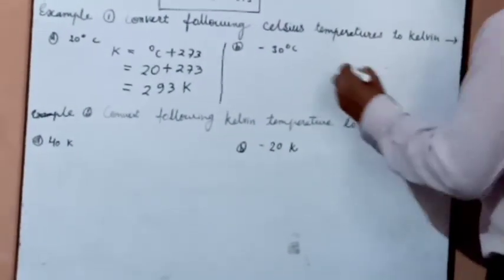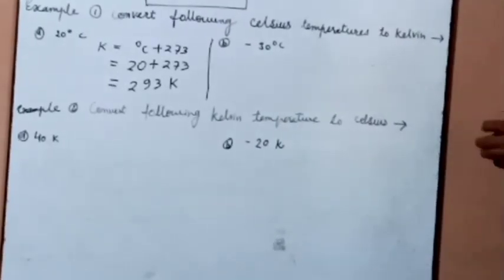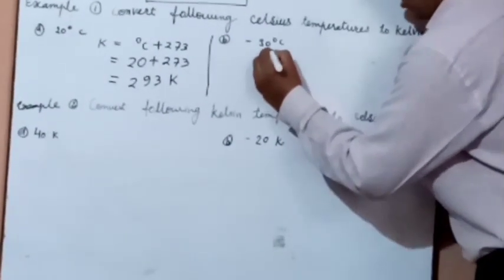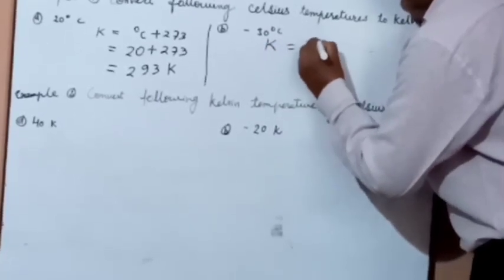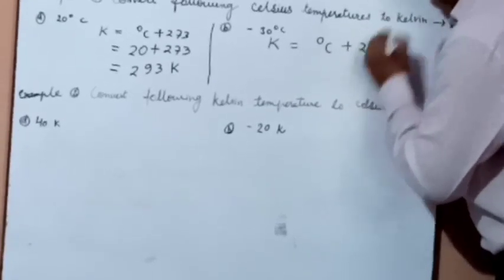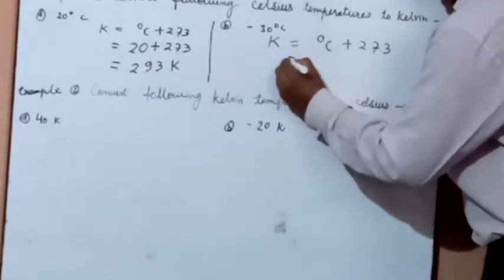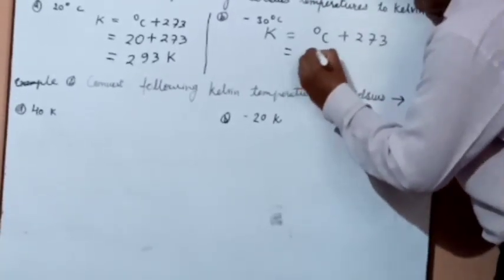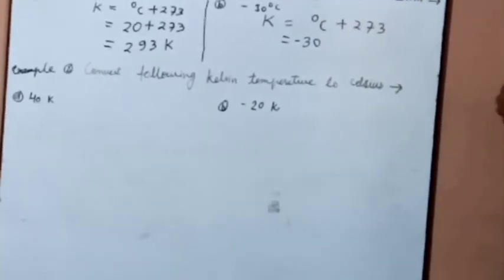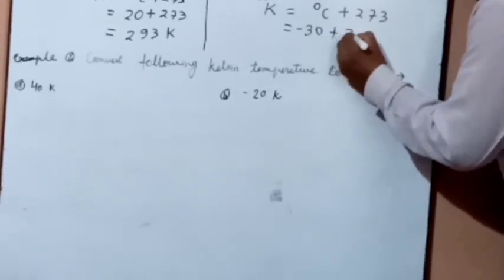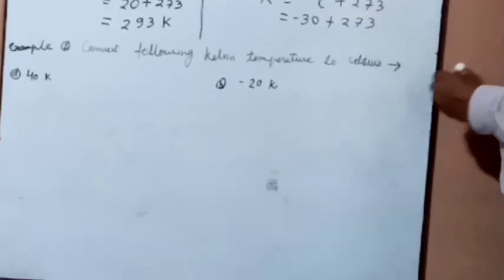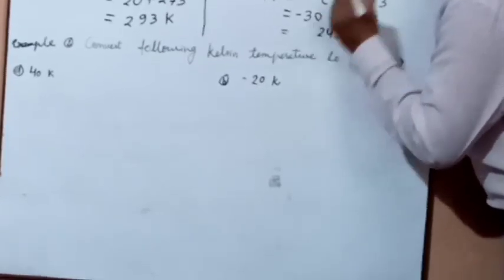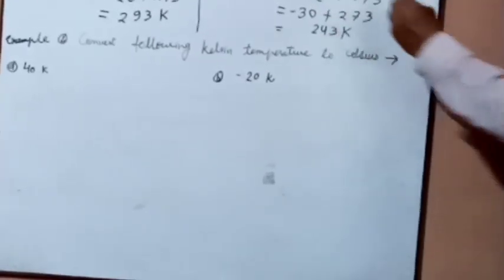Second example: minus 30 degree Celsius. The procedure is the same. First, we write the formula: Kelvin = degree Celsius plus 273. Given temperature is minus 30 degree Celsius, so we put minus 30 plus 273. The answer is 243 Kelvin.